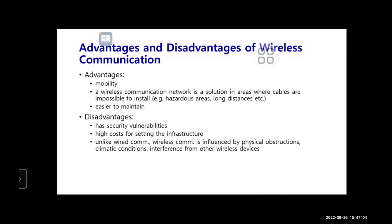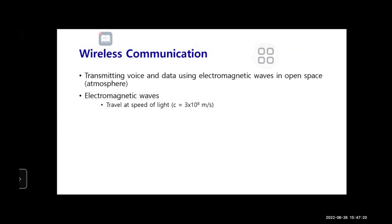Wireless communication has some security vulnerabilities, but this problem can be solved through preventive measures. Wireless communication is a method of transmitting information from one point or host to another without using any connection like wires, cables, or any physical medium. The information — which can be voice or any kind of data — is transmitted using electromagnetic waves.